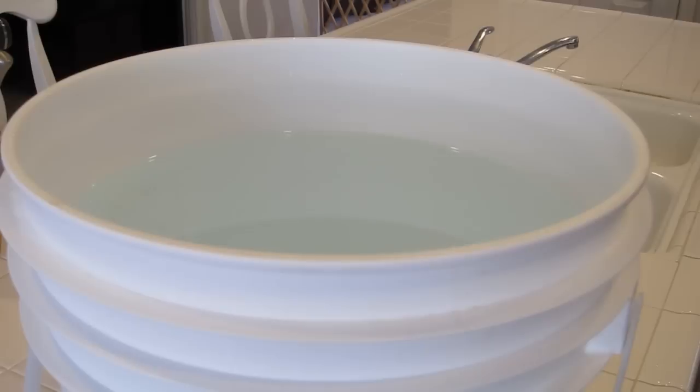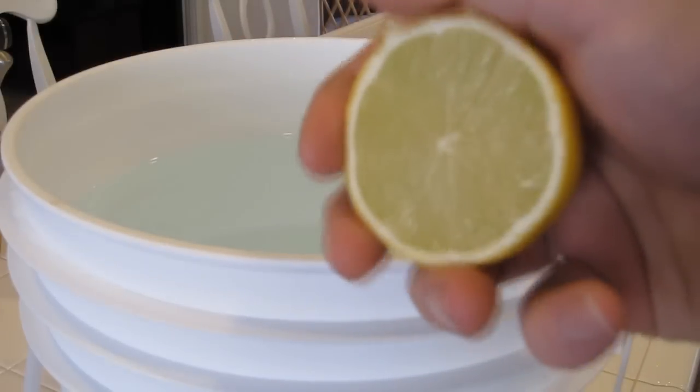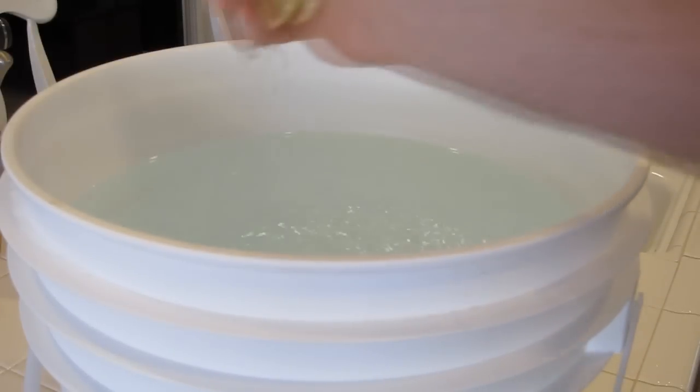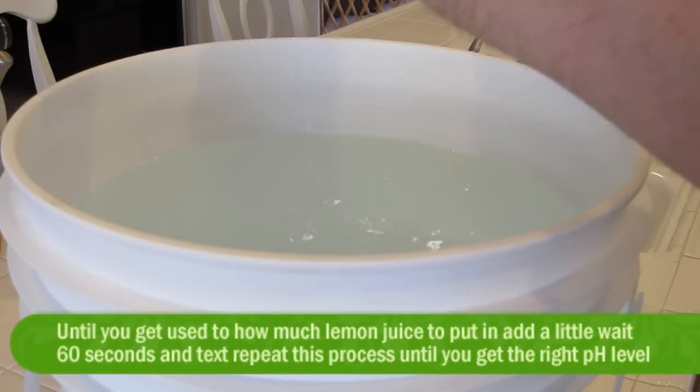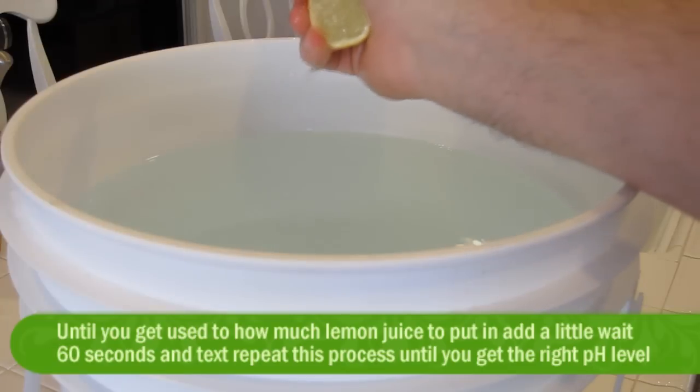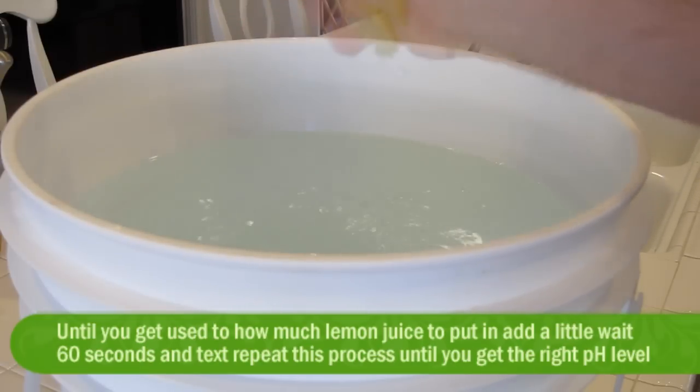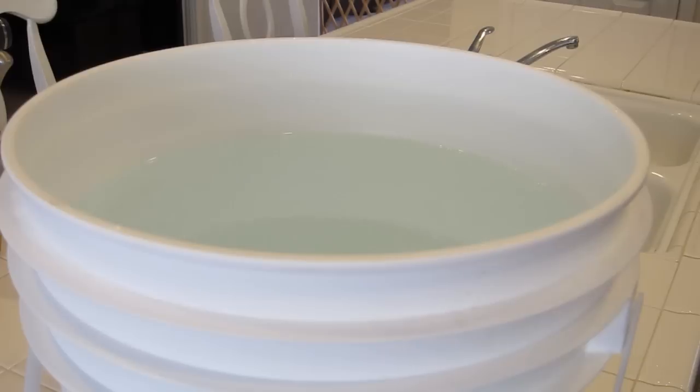So quite simply, what I'm going to do is just cut my lemon in half and squeeze it into the water. Try not to get any of the seeds in there or the pulp, and if you can do it through some cheesecloth, that'll be great. That's one half, and what we need to do now is give that a little stir with a wooden spoon and let it sit for 60 seconds. We'll come back and retest the water.